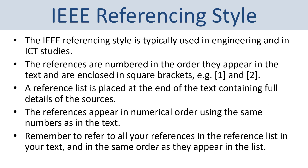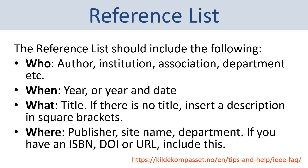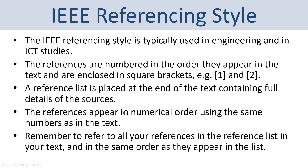In technical reports we typically use the IEEE referencing style, which is commonly used in engineering and ICT studies. References are numbered in the order they appear in the text and are enclosed in square brackets — for example, [1] for the first reference and [2] for the second. At the end of the document a reference list is placed covering who, when, what, and where, in the numerical order the references appear in the text.